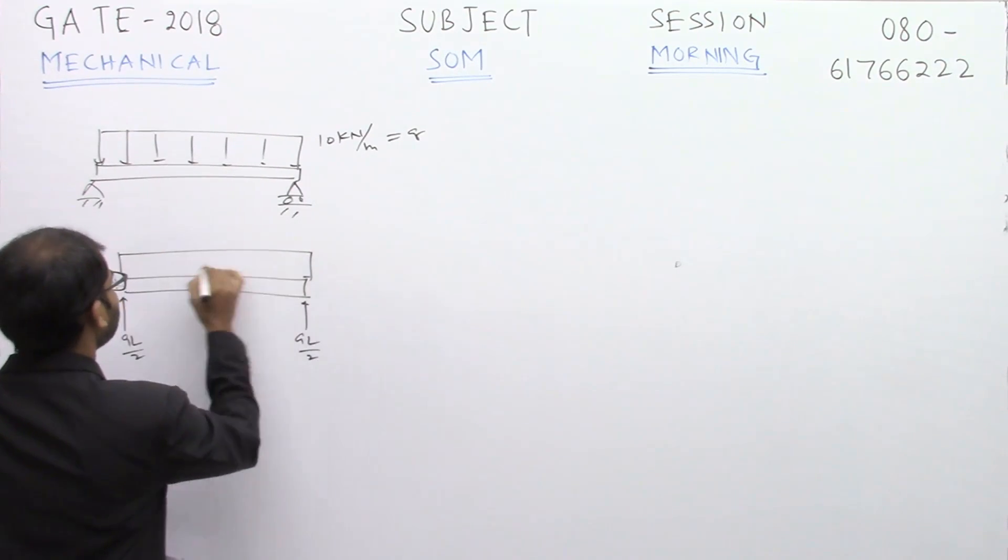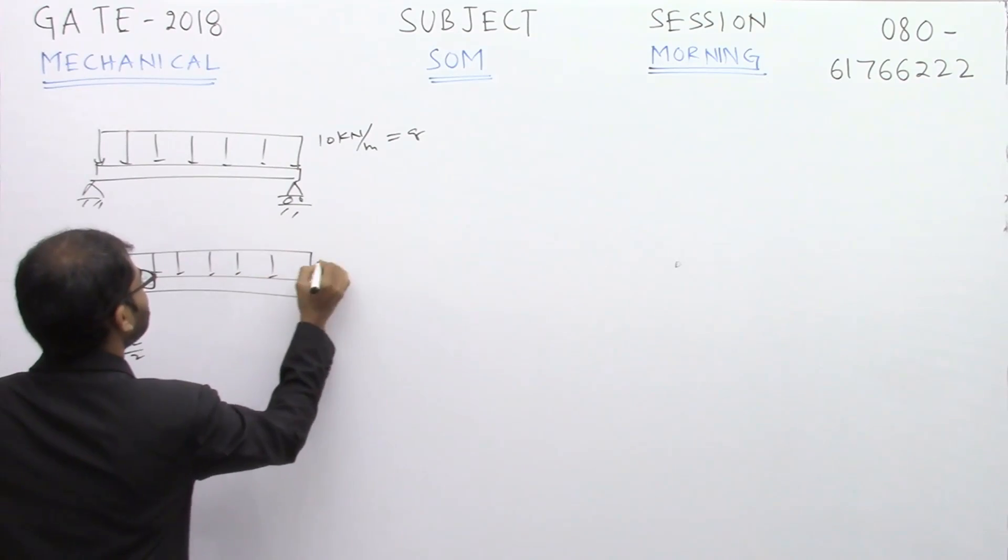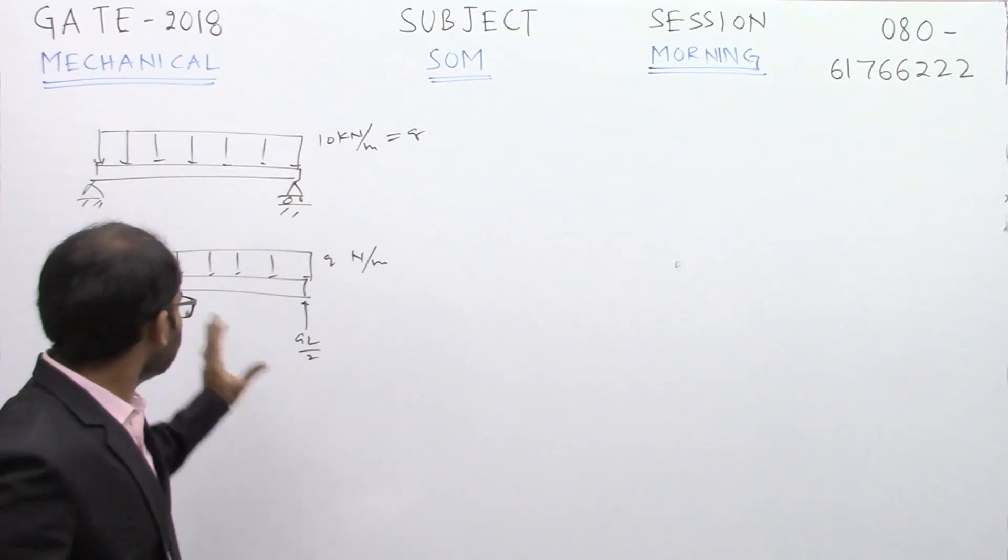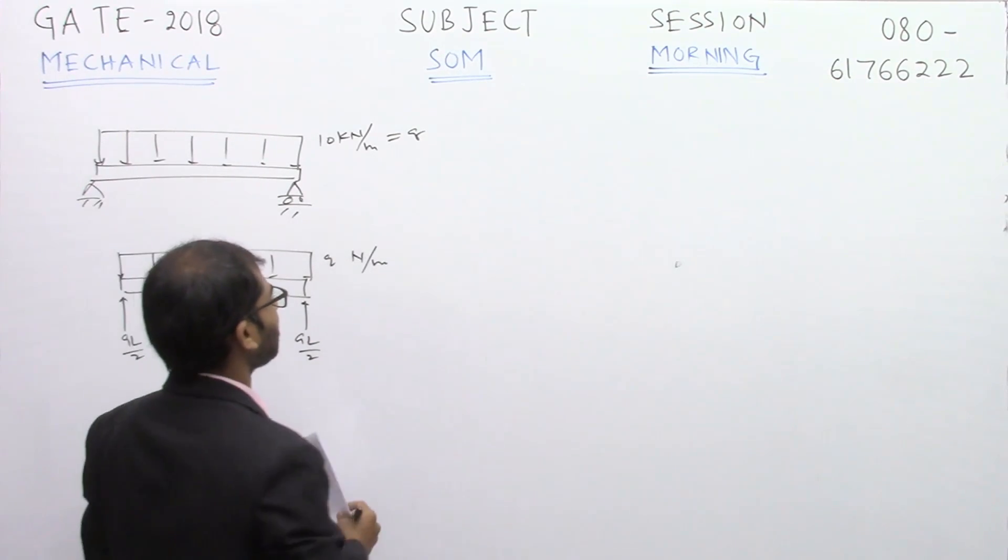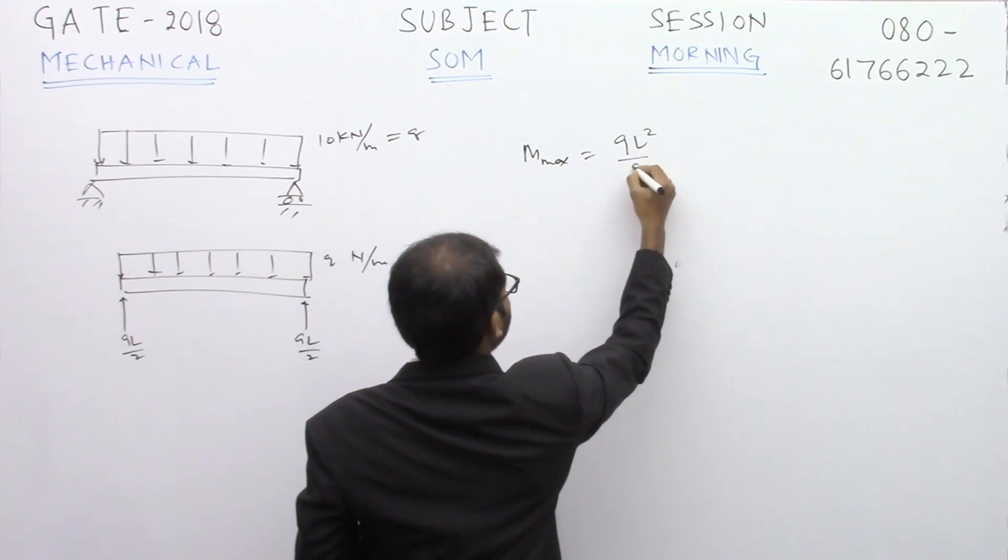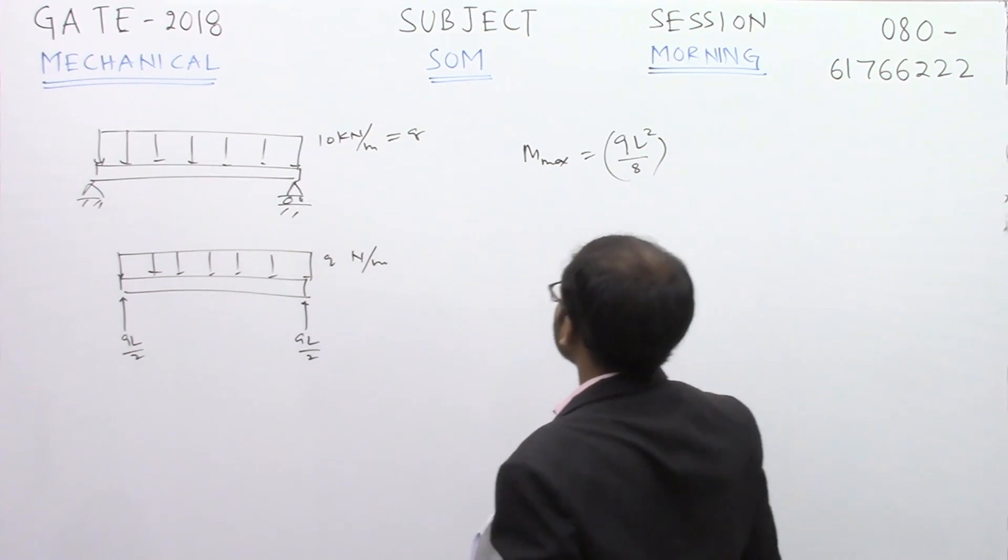You have uniformly distributed load of intensity q newtons per meter. I'm putting q in terms of newtons per meter here. For this loading case, we have maximum bending moment given by qL² by 8.